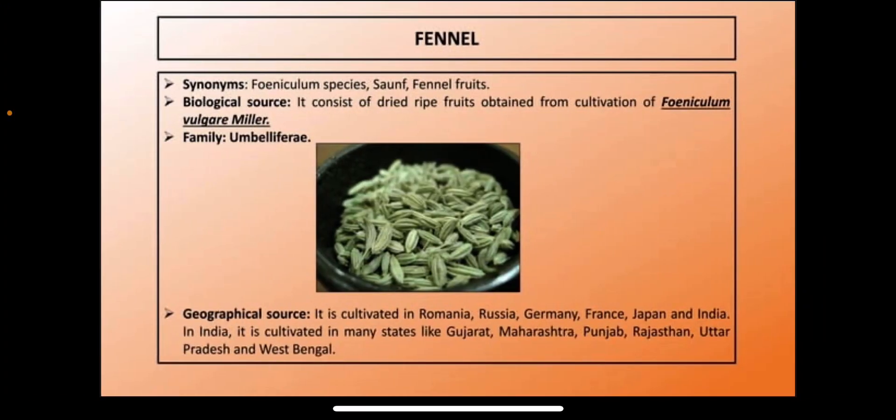Next, the herb used as a carminative is fennel. Synonyms of fennel are Foeniculum species and fennel fruit. Biological source: it consists of the dry fruits obtained from the cultivation of Foeniculum vulgare Miller, belonging to family Umbelliferae. These ripe fruits are from the Umbelliferae family.